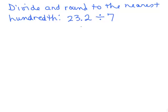Let's do this problem. It says divide and round to the nearest hundredth. So we begin by dividing 7 into 23.2. Remember we want to make sure this number over here on the left is always a whole number. And that means we can put the decimal point up here.